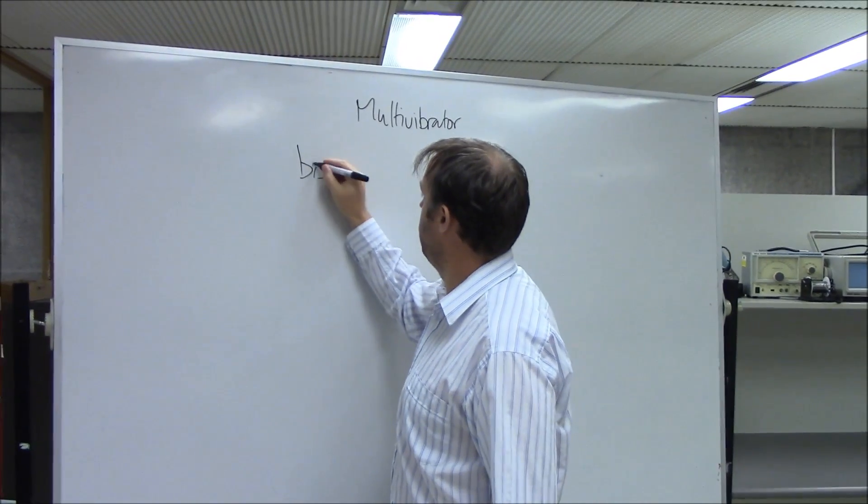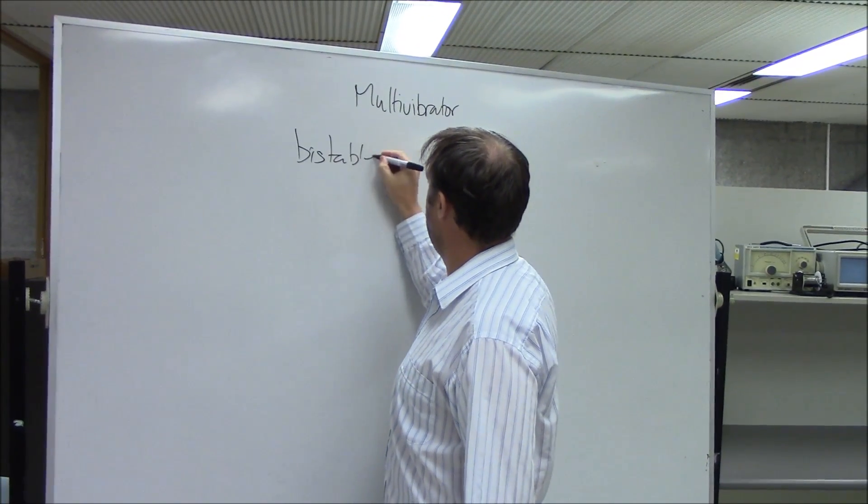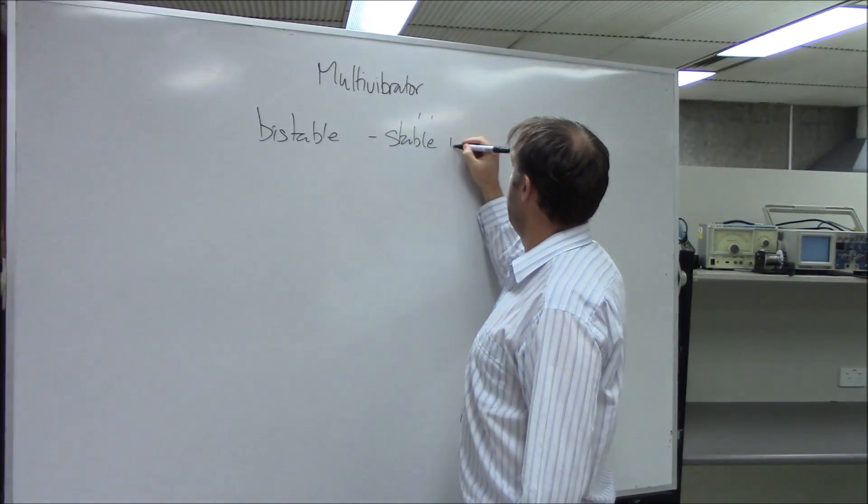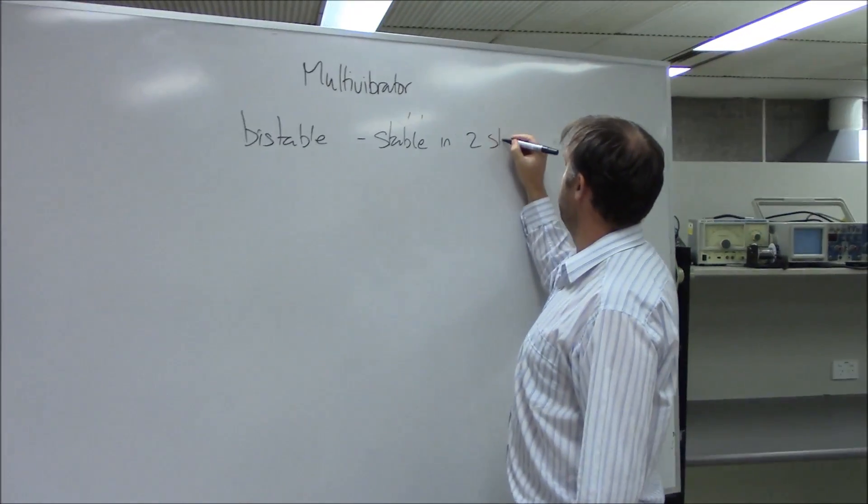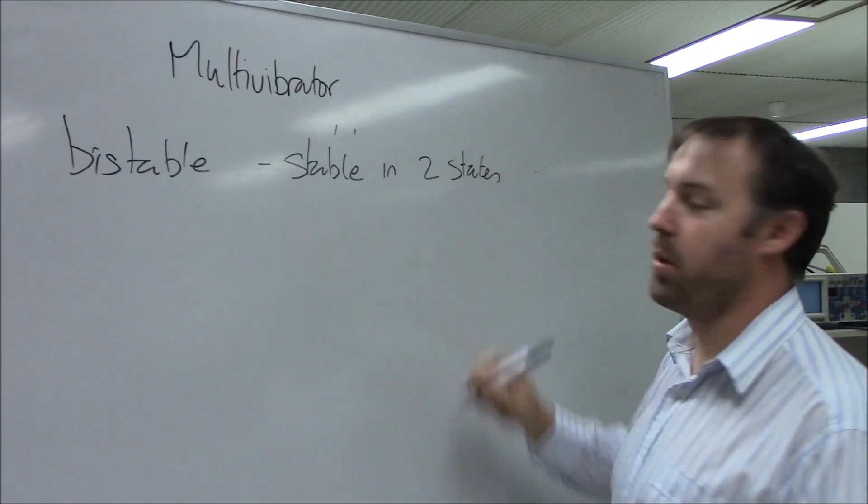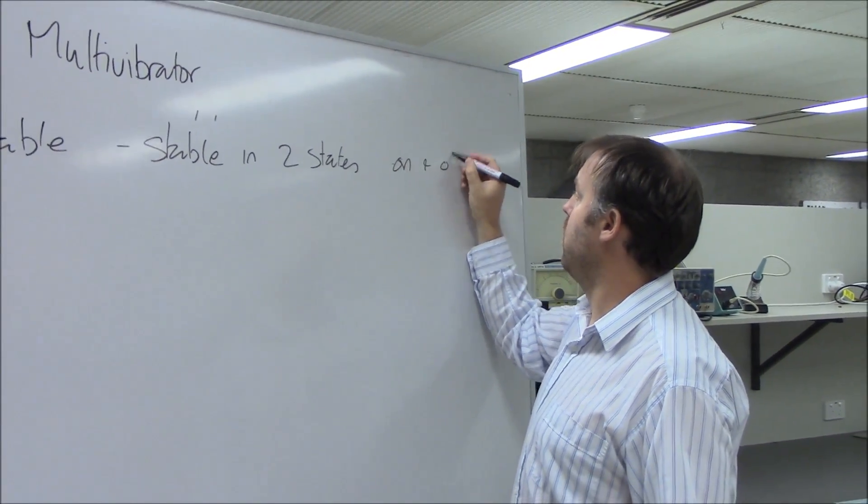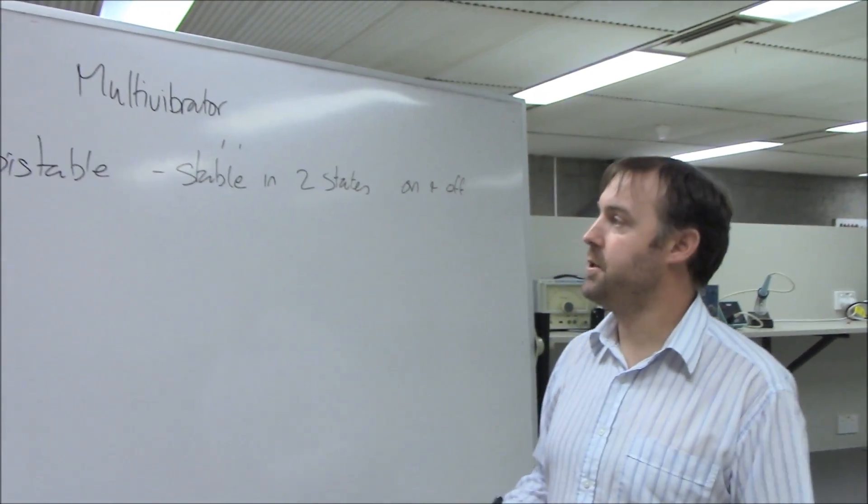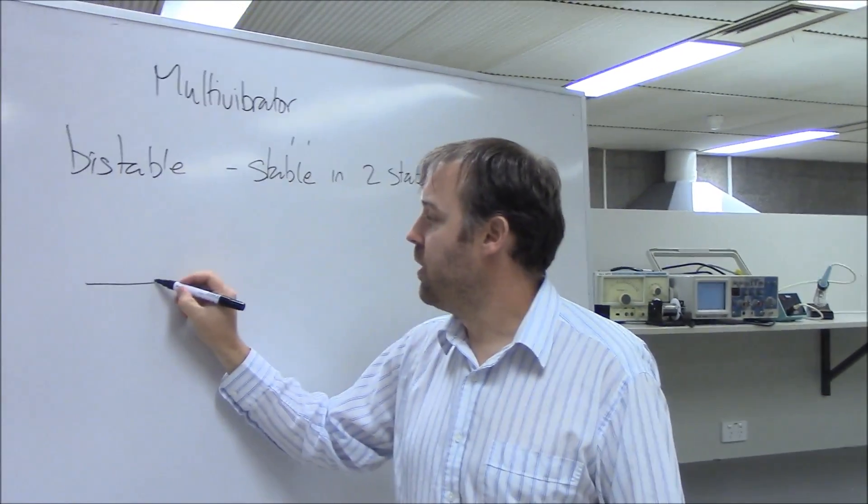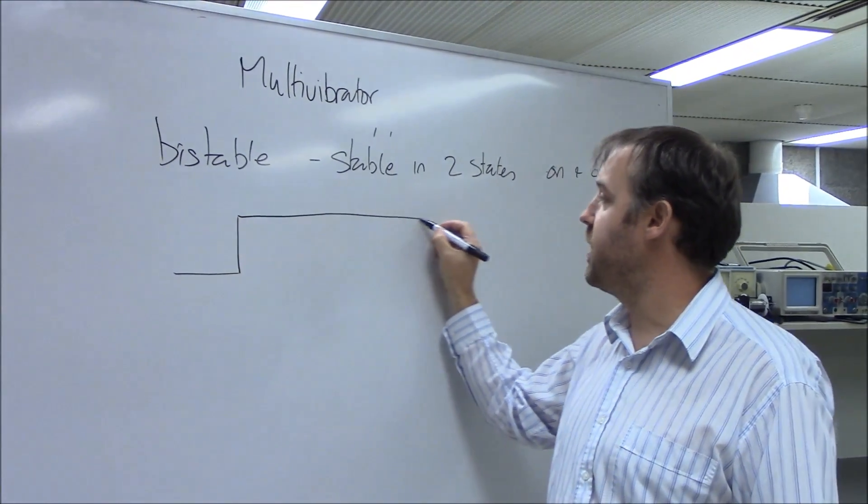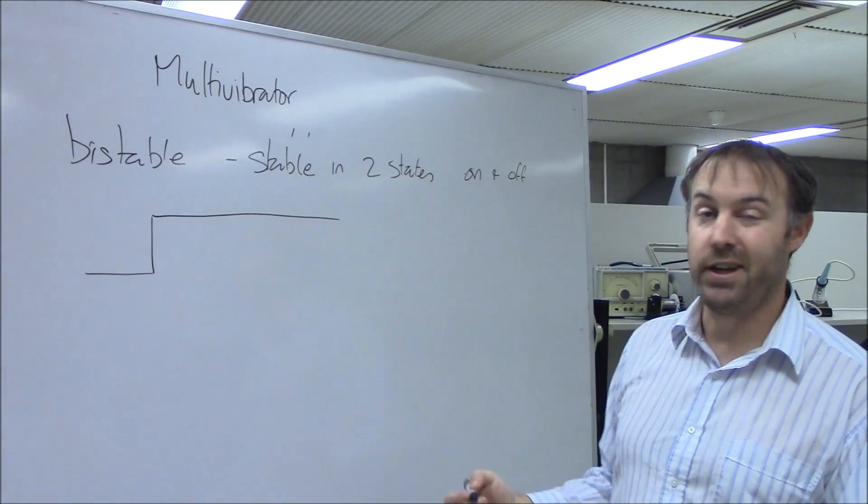Bistable is stable in two states, so both the on and off state. If I were to look at it, it would be low to start with and I'd trigger it and it would change to high and it would stay there until I triggered it again.